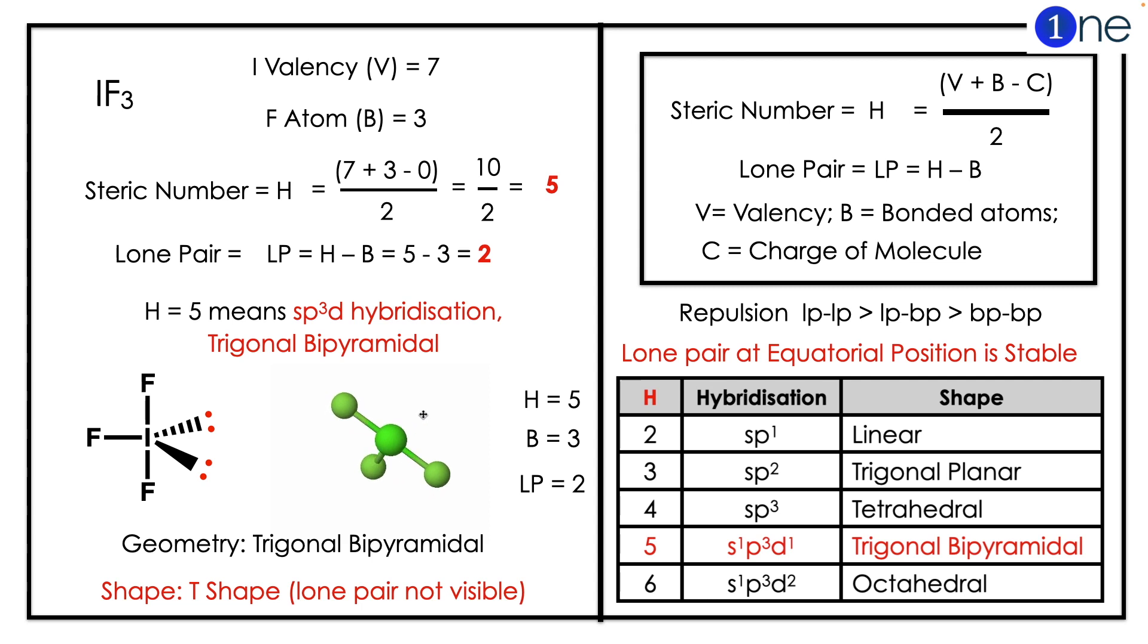Here to find the hybridization, you should know the steric number, which is H equals V plus B minus C, whole divided by 2. So the lone pair will be H minus B. If you substitute in the formula...